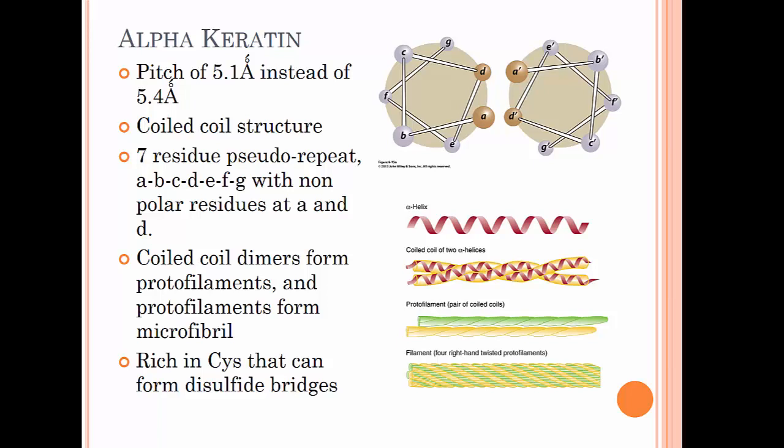The primary sequence of alpha-keratin contains a seven residue pseudo-repeat in which the first and seventh residues contain non-polar R groups. This repeat allows for the formation of a hydrophobic face at the coil-coil interface between two strands. Two coil-coil fibers can then assemble with another pair of coils to form what we call a protofilament. Then two protofilaments can further assemble to form a single microfibril.